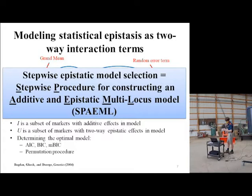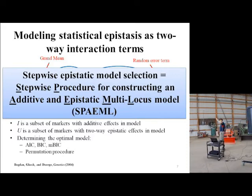Here the Y variables are our trait of interest, and then we'll do a statistical procedure to determine the set of markers as X variables that have an individual contribution to the trait. And then we'll have another set of pairs of markers that have an epistatic interaction effect. Then we have our grand mean and random error term. So then we can do a statistical optimization procedure to choose which DNA genotypes to include as X variables.